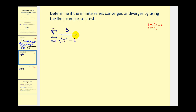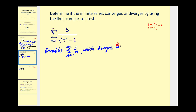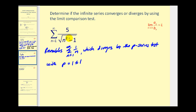Let's look at another example: the summation of five divided by the square root of n squared minus one. If we ignore the minus one, we'd have the square root of n squared, which equals n. So this series resembles the harmonic series of one divided by n, which we know diverges by the p-series test with p equal to one, which is less than or equal to one. Since the series it resembles diverges, if we take the limit of this quotient and L is a finite positive number, it will also show that the given series diverges.